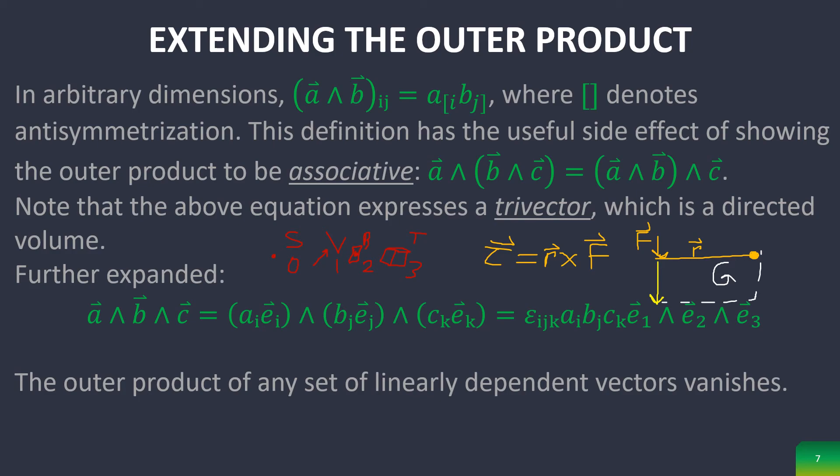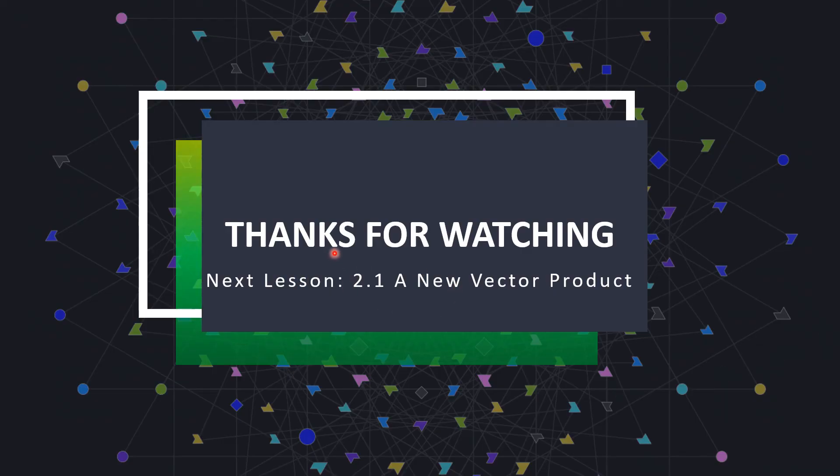Moving on from that, the outer product of any linearly dependent vector vanishes, which honestly, I don't want to explain too much because it's pretty easy to visualize. Basically, if you have two vectors, which are just components of each other, it's the same reason why a vector wedge itself is equal to zero. It's the same logic used there. Thank you for watching. I hope this made sense. This is where we start getting into interesting parts about geometric algebra, and it'll start getting even more interesting in the next episode where we go to section 2.1, which is the new vector product. Thank you so much for watching. Bye.